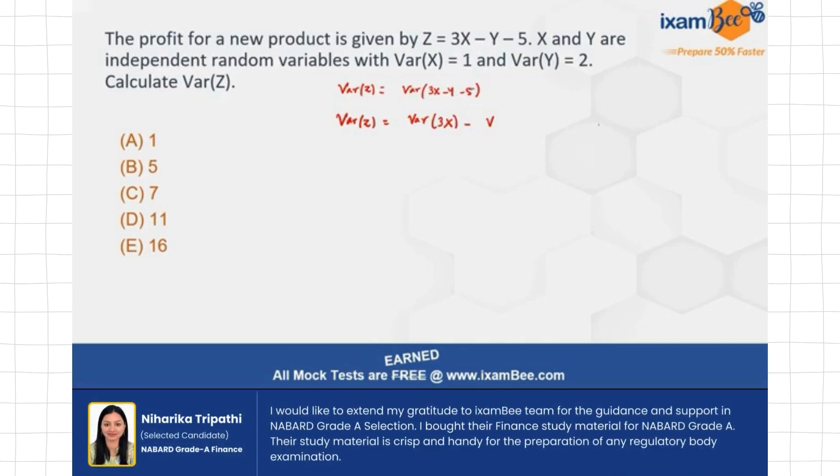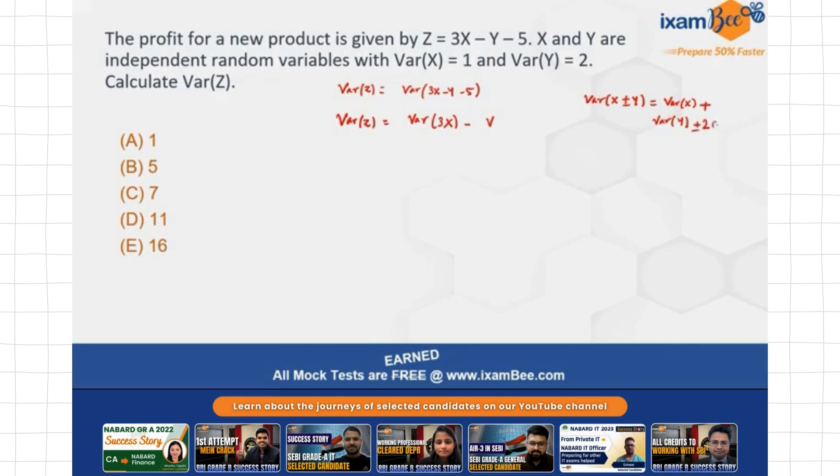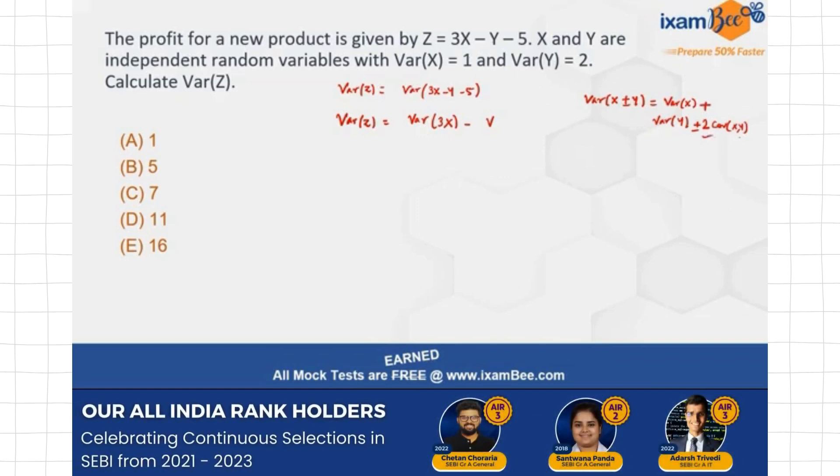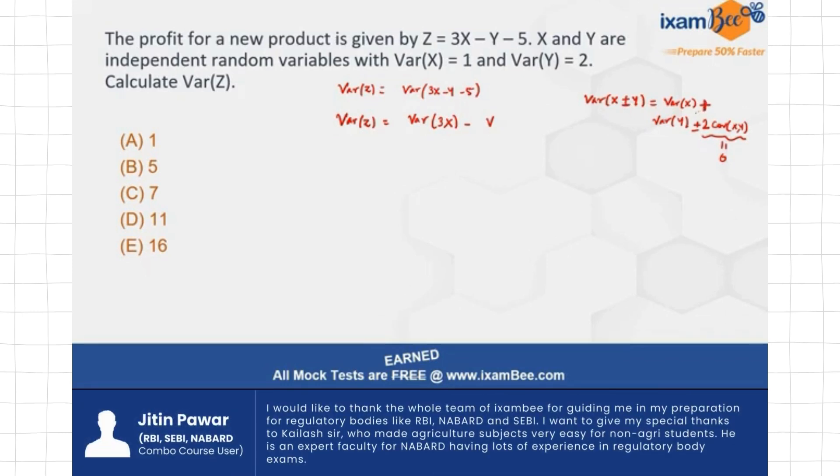Now because here, see what is the formula for variance of X plus minus Y? I write this as variance of X plus variance of Y minus plus minus whatever the sign is in between 2 into the covariance of X and Y. This is the actual formula. And if at all, X and Y are independent, then this term becomes 0 and I only have variance of X plus variance of Y. Even if there is a negative sign in between, then also I have a plus variance of Y, right? So this is the important thing that you need to keep in mind.